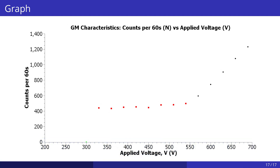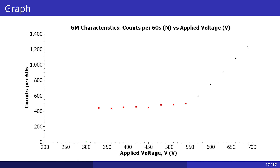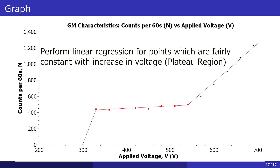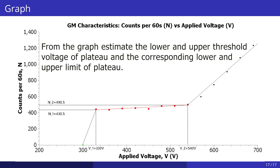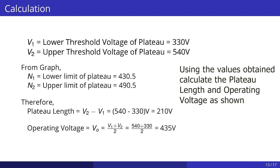After the performance of the experiment, plot the GM characteristics curve. Perform linear regression for points which are fairly constant with increase in voltage — this gives us the plateau region of the GM counter. From the obtained graph, estimate the lower and upper threshold voltages of the plateau and the corresponding lower and upper limits of the plateau. Using the values obtained, calculate the plateau length and the operating voltage.